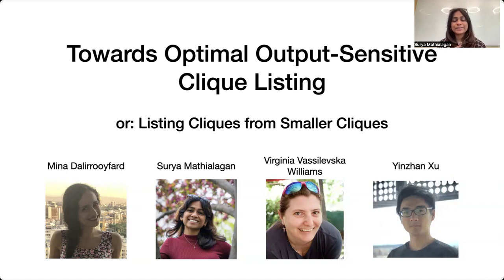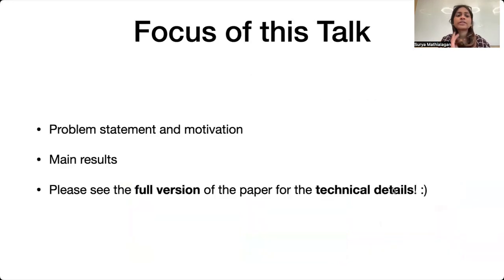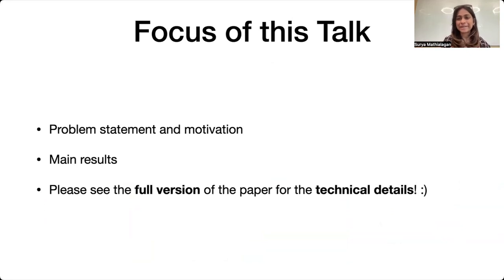Hi everyone. I'm Surya, and today I'll be talking about our work towards optimal output-sensitive clique listing, or listing cliques from smaller cliques. This is joint work with Mina, Virginia, and Yunjun. The focus of this talk is going to be the problem statement and motivation and the main results in this work, and I'll be deferring all the technical details to the paper itself, so if you're interested, please look at our paper.